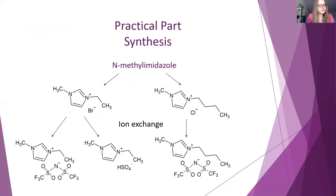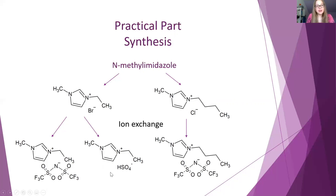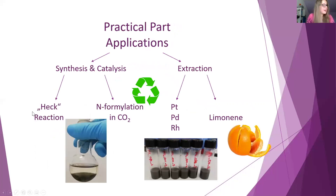Over the course of different syntheses, five ionic liquids were produced: two imidazolium salts with halides — bromide and chloride — and after some ion exchange and modification, further variants with hydrogen sulfate or the bulky bis-trifluoromethane sulfonimide as a counter-ion. After analysis, processing, and purification, they were used in several applications that fell under the themes of organic synthesis and catalysis, as well as extraction.